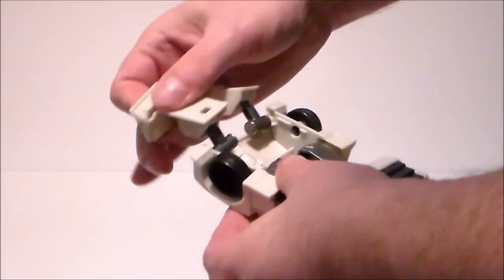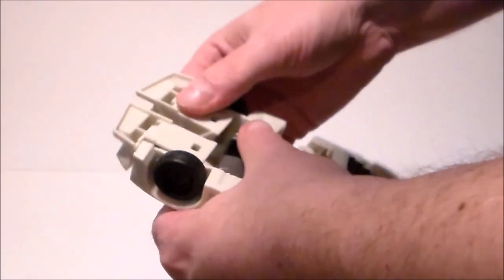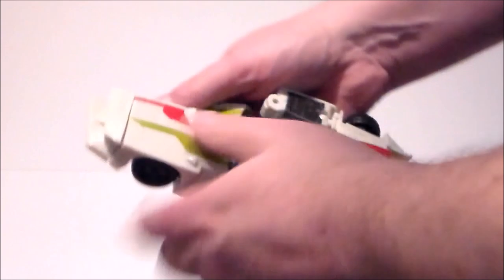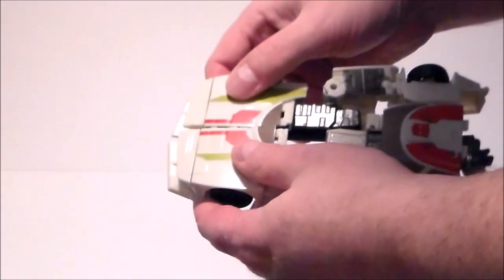Then we're going to rotate these in and clamp them into place like that. Then what you want to do is connect the front of the car together, so these two will clamp into place.